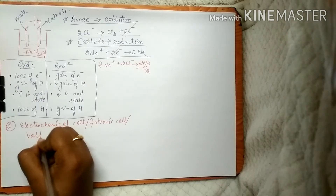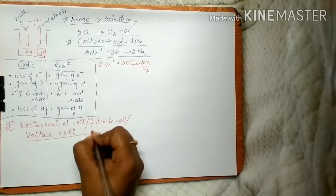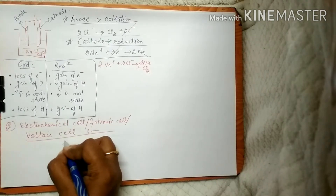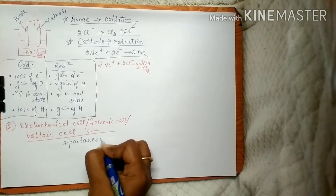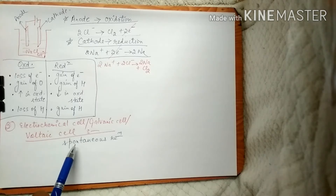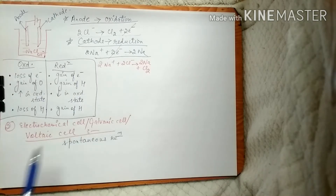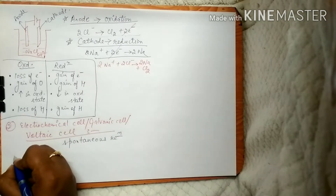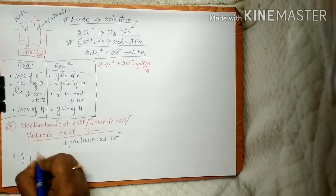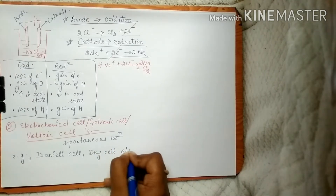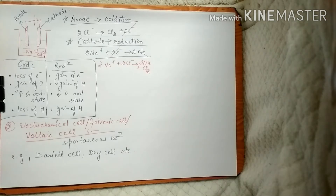The next type of cell is the electrochemical cell, also called the galvanic cell or voltage cell. In this type of cell, we use a spontaneous reaction. We try to harness the energy of spontaneous reactions — spontaneous reactions happen on their own and do not require any driving force. Examples include the Daniel cell or the dry cell.